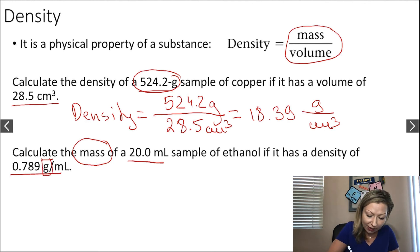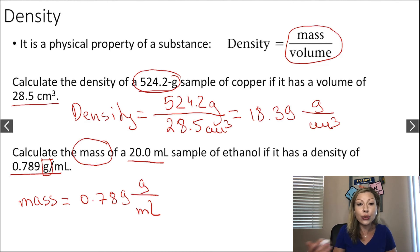To solve for the mass, we can take the density, which is 0.789 grams per milliliter. Now we have to figure out how to cancel out the milliliters to get to grams. To do that, you put the milliliters on top if it were a fraction. So it would be 20.0 milliliters divided by 1.